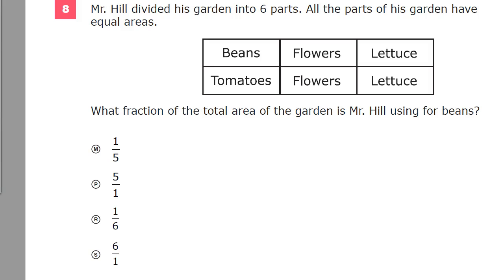Mr. Hill divided his garden into six parts. So he has this rectangular garden, the whole thing here, and he breaks it into six parts, putting out beans, tomatoes, flowers, and lettuce. All the parts of his garden have equal areas.